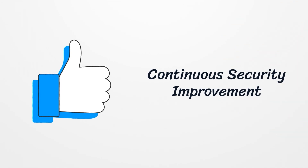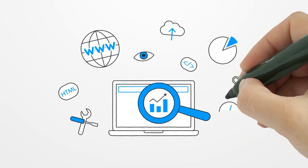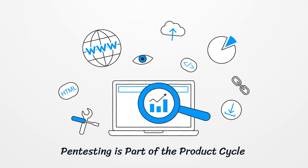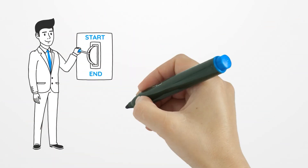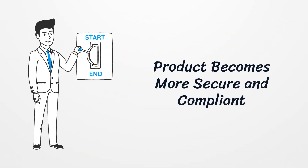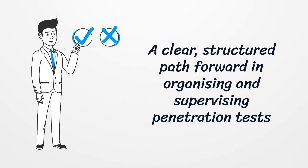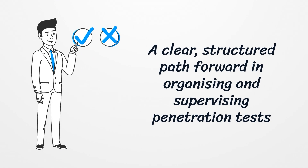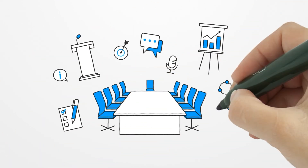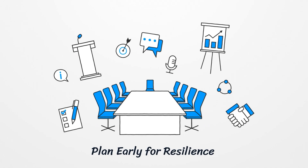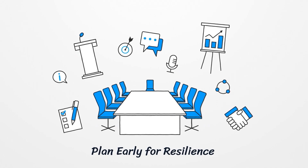Post-remediation testing confirms improvements, and lessons learned support ongoing security cycles. Pen testing is part of the product cycle, performed during the development and run processes. By ensuring you perform CRA-aligned pen testing practices from the start, your product becomes more secure and compliant, accelerating market readiness. Whether you're a manufacturer, SME innovator, or cybersecurity team, this pen testing methodology provides a clear, structured path forward. Don't wait until the final stages to consider resilience — early, smart planning saves resources, reduces risk, and builds trust.